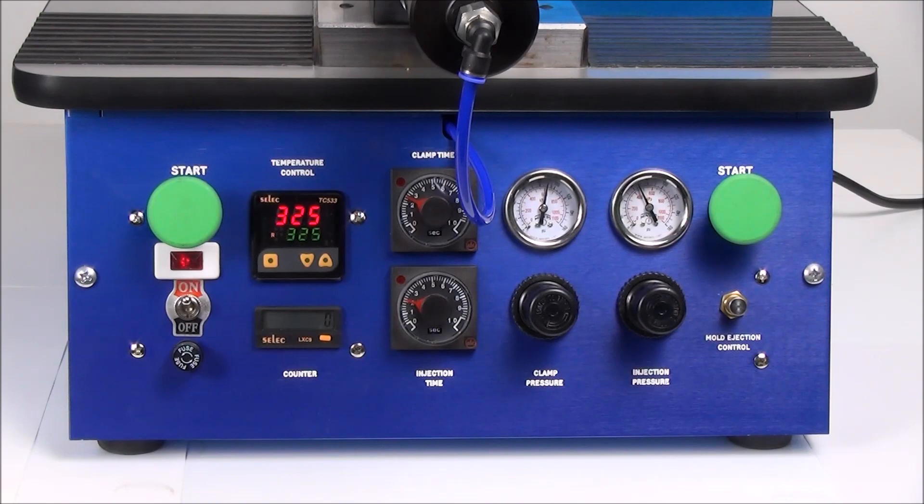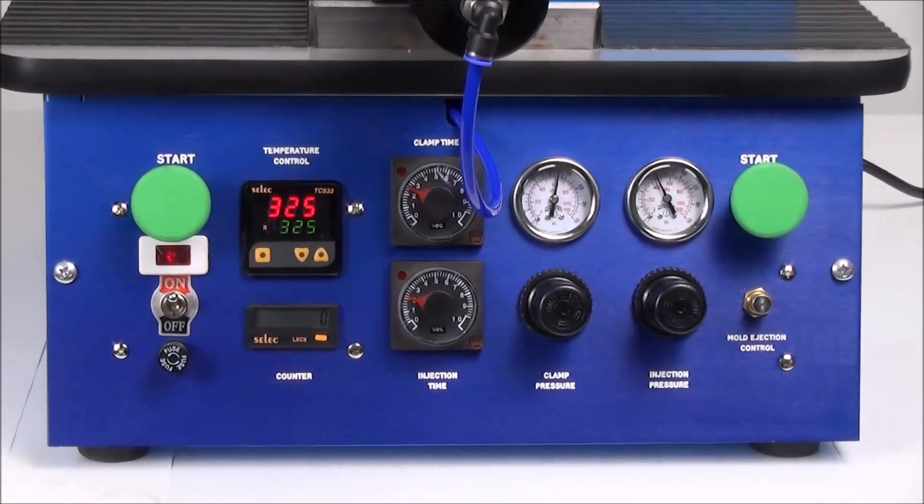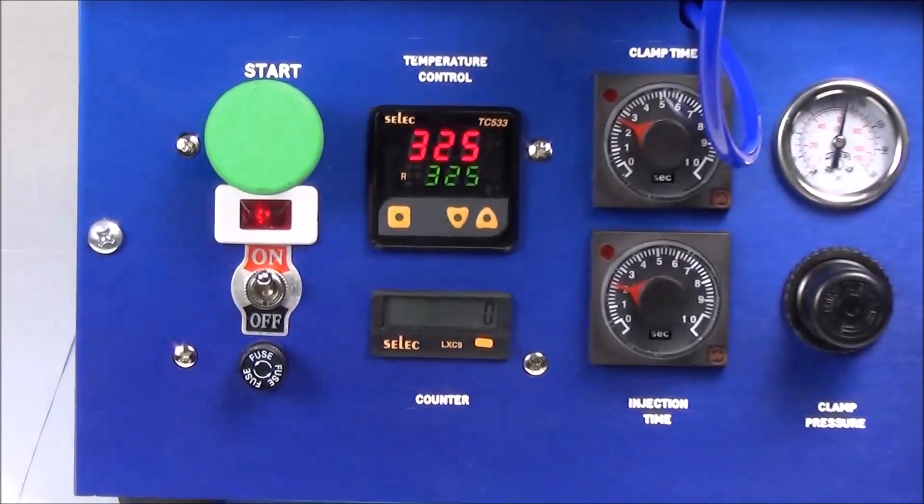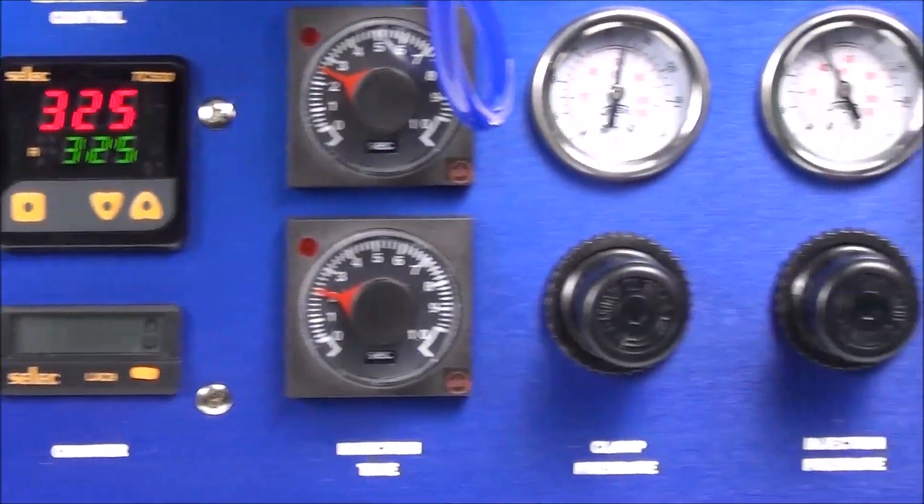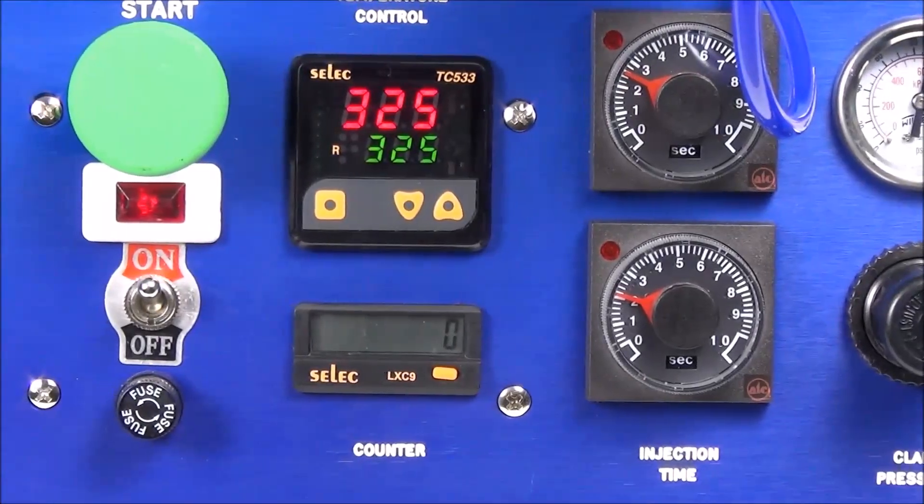Now let's look at the control panel. The on-off switch is located at the bottom left hand side of the control panel. Situated on either side of the control panel are two cycle start buttons. They must be depressed simultaneously to initiate the injection cycle.